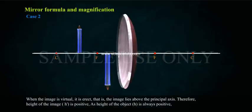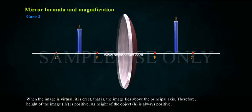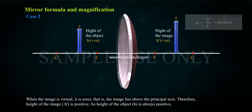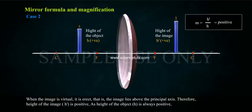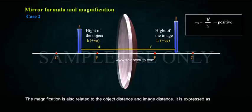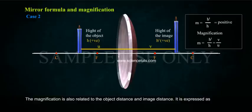Case 2: When the image is virtual, it is erect — that is, the image lies above the principal axis. Therefore, the height of the image H' is positive. As the height of the object H is always positive, M = H'/H is positive. The magnification is also related to the object distance and image distance, expressed as M = H'/H = -V/U.